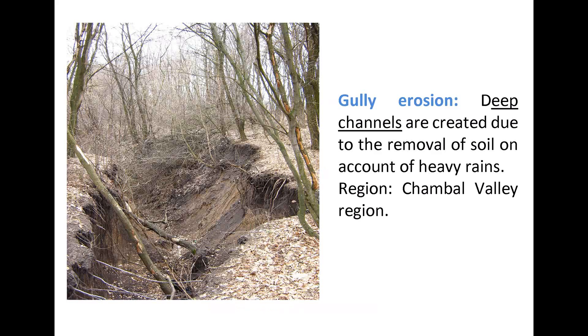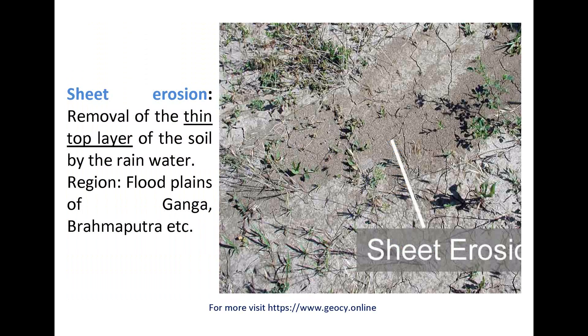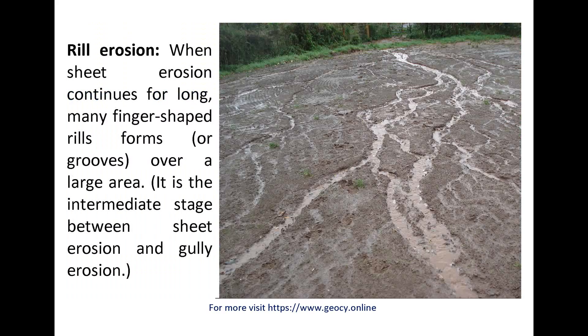Gully erosion is found in regions like the Chambal Valley. Sheet erosion is the removal of the thin top layer of the soil by rain water, found in flood plains of Ganga, Brahmaputra, etc. Rill erosion occurs when sheet erosion continues for long and many finger-shaped rills form over a large area.